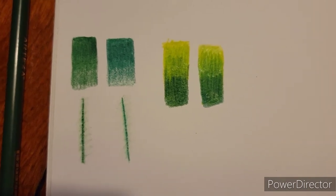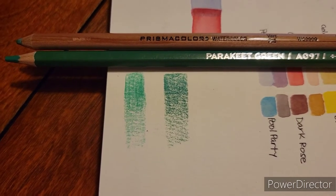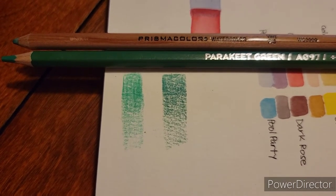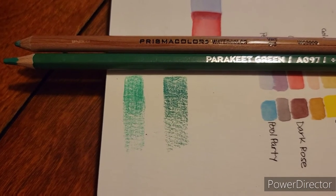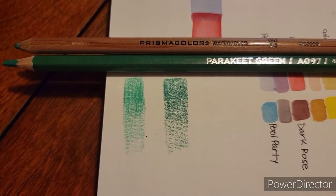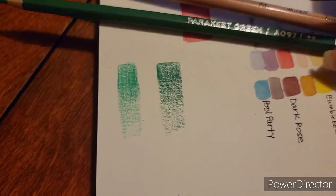Alright let's go and check out the watercolor pencil. For this exercise the only watercolor pencil that they had was parakeet green, so I paired it with just the grass green Prismacolor again. I haven't applied water yet.